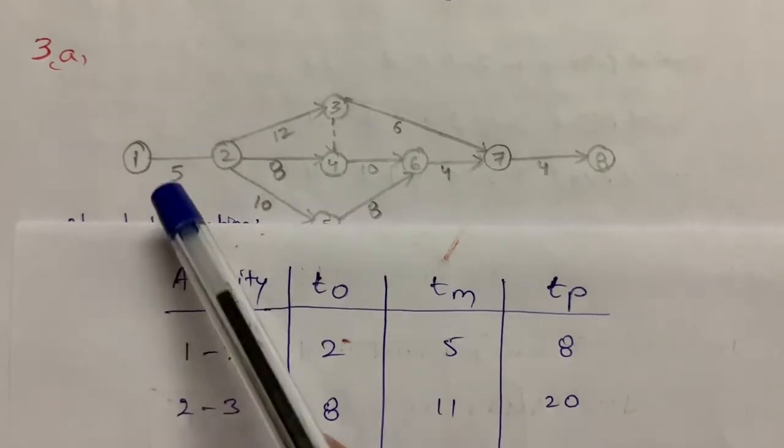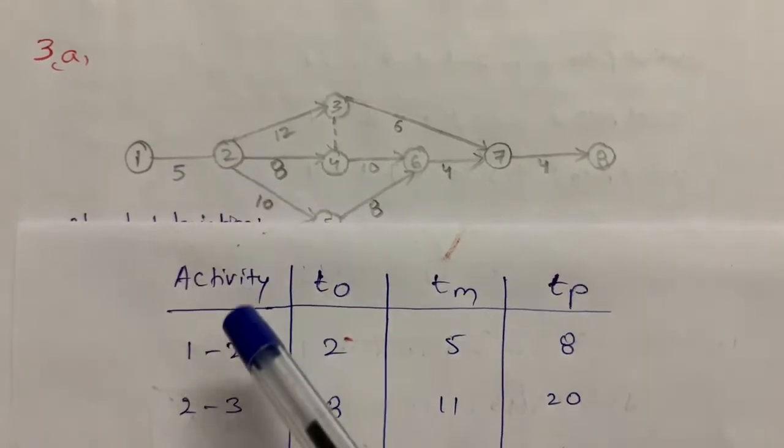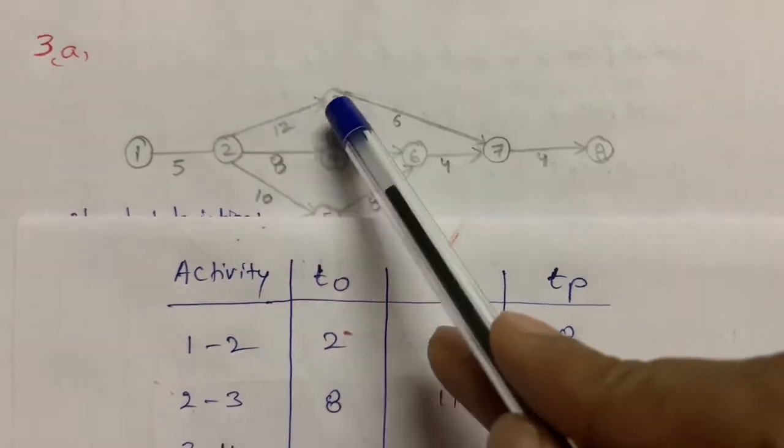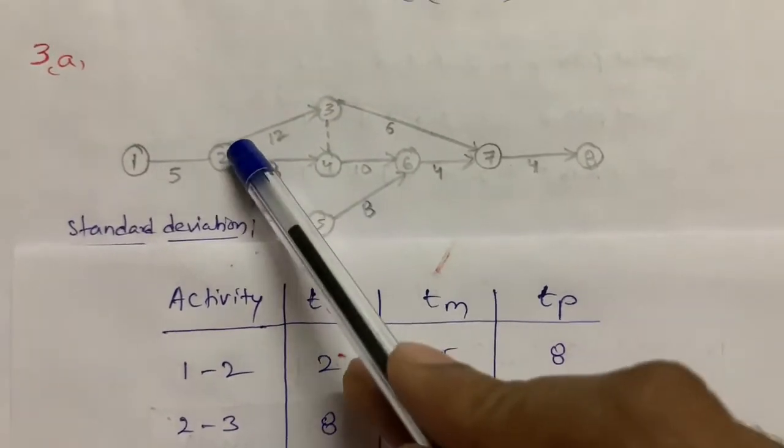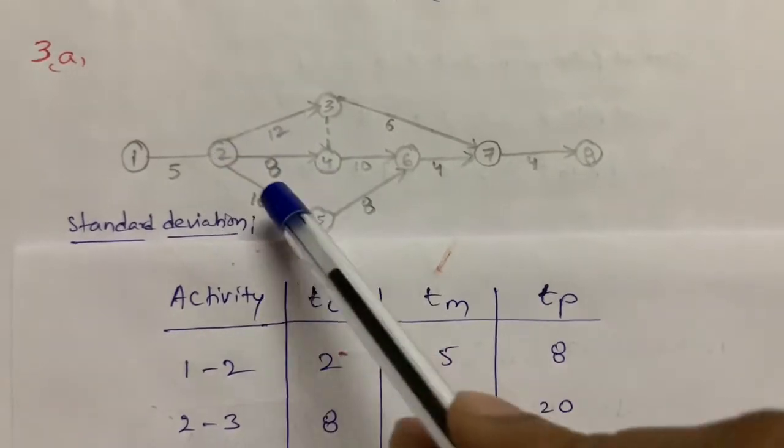For 1 to 2, I represent it as 1 to 2. After that, 2 to 3. After completion of this activity, 3 activities are started parallelly: 2 to 3, 2 to 4, and 2 to 5.